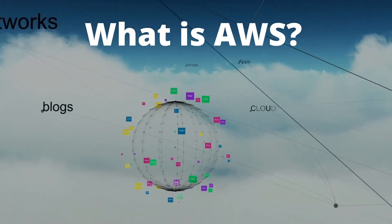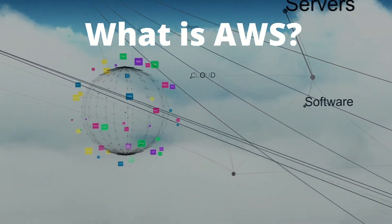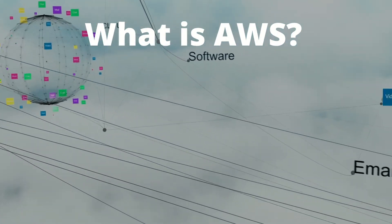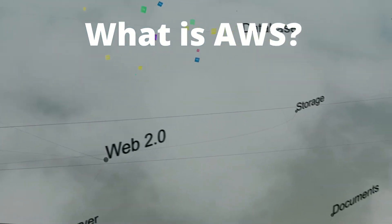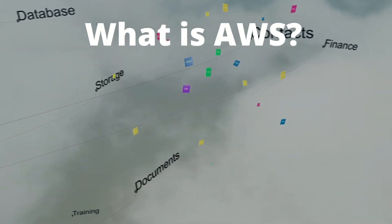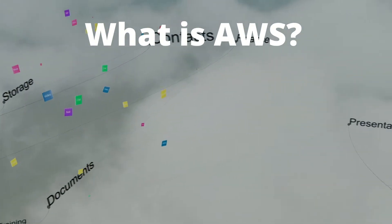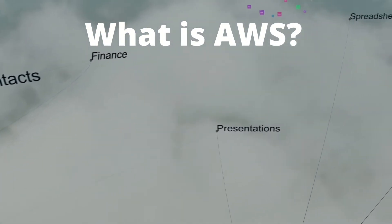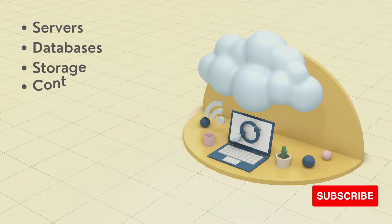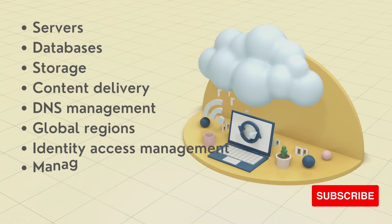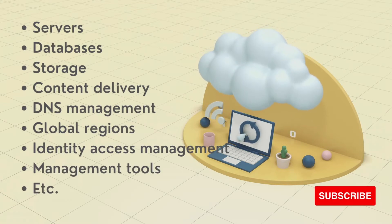So what is AWS? Amazon Web Services, aka AWS, is a cloud platform and it's the world's most popular, reliable, secure, scalable, and easy-to-use cloud service available on the planet. It provides on-demand infrastructure on a pay-as-you-go basis, with a suite of 200+ services that includes servers, databases, storage, content delivery, DNS management, global regions, identity access management, and management tools — all used by top companies in the world.